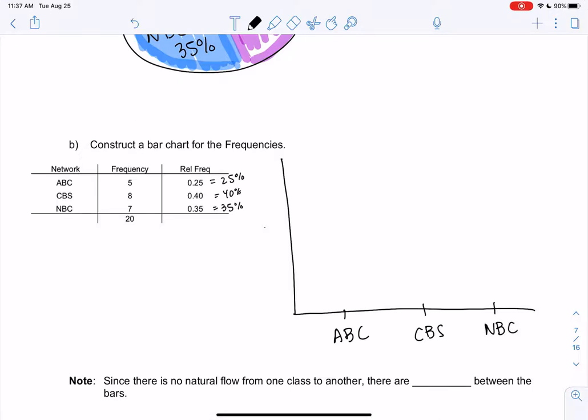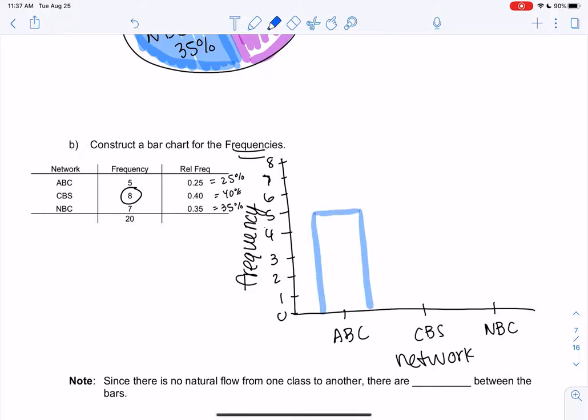Alright, these are our networks. And then we're going to do frequencies, so frequency goes up and down. We're only going up to eight, so I'll just go zero, one, two, three, right, eight's the largest, four, five, six, seven, eight. If you have binder paper, right, each line of binder paper could be your count. And then we're just going to go ahead and make bars. So ABC goes up to five, so we go up to five, label the center, that's ABC. CBS has eight, so we just go up to eight and I am going to do gaps this time. That's CBS, and then NBC has seven.